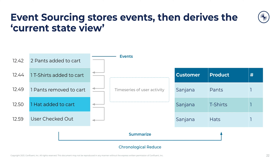By transforming the event view on the left into the table view on the right, we can then display our shopping cart easily. Note how the event view on the left-hand side of the image has more information than the table view on the right. The transformation is unidirectional, so you can go from the events view to the table view, but not back again, as information is lost as we move left to right. This is why event sourcing is so powerful — it retains extra data about what really happened in the world that would traditionally, if we're using the CRUD approach, be thrown away.